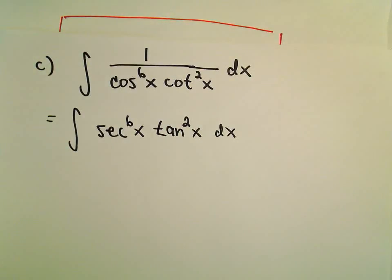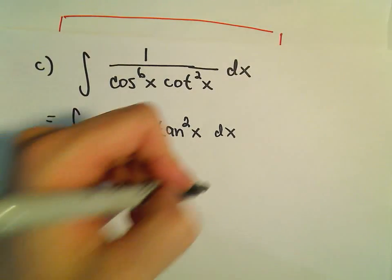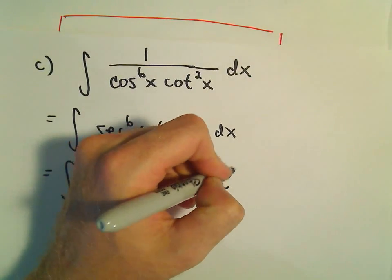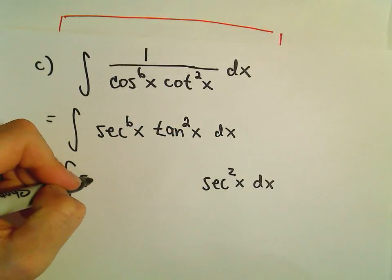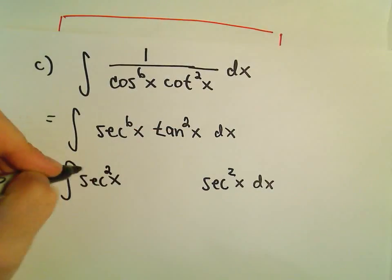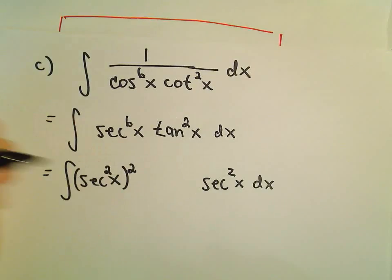We can do the same thing as before. We'll save an even power of secant, so we'll have secant squared x dx. We'll have secant to the fourth left over, but I'll write that as secant squared squared.